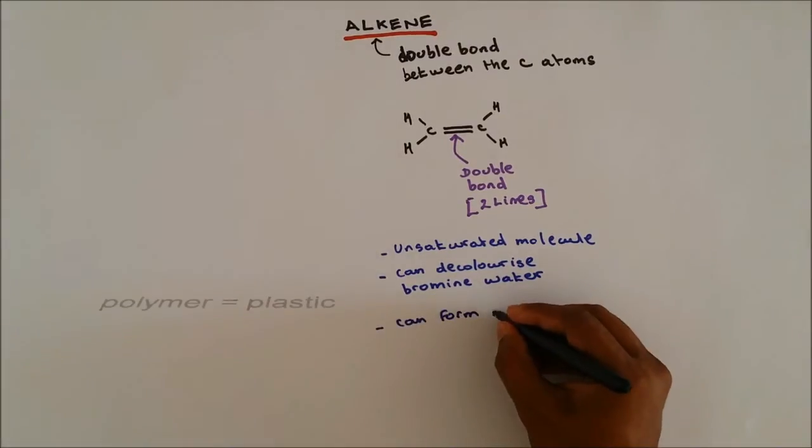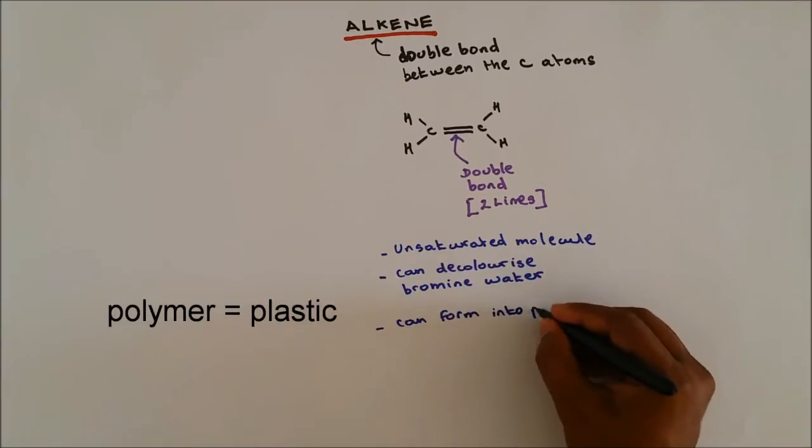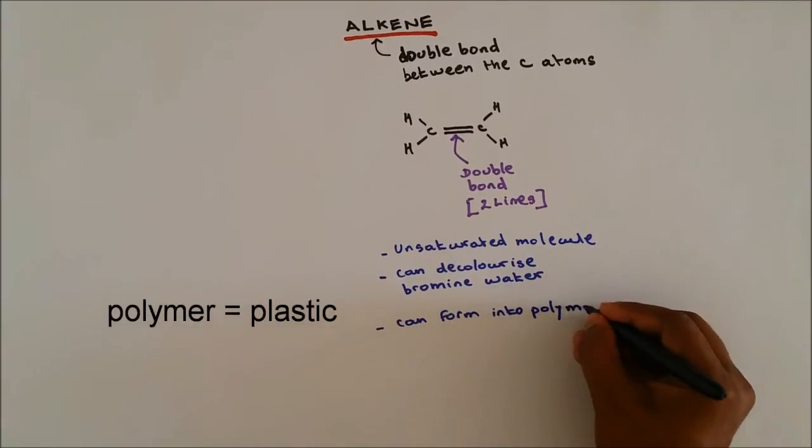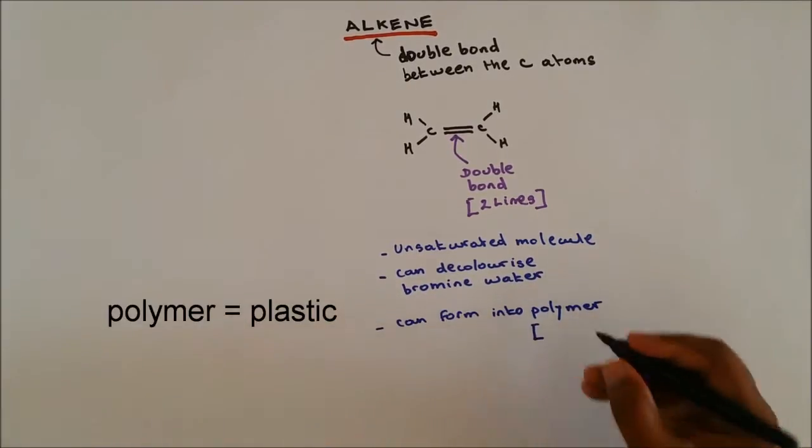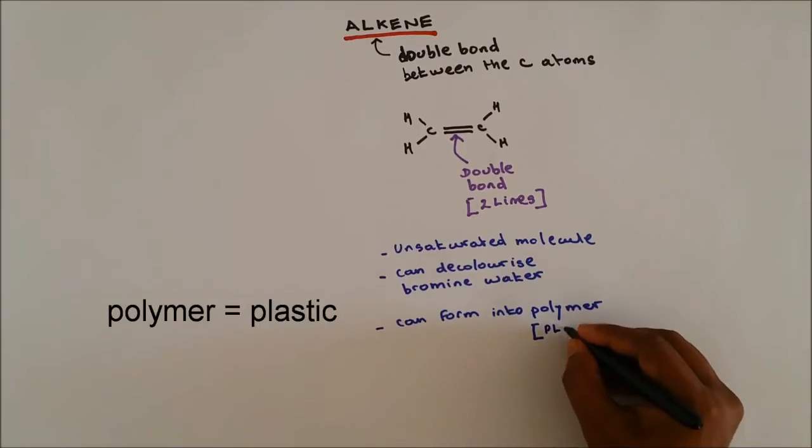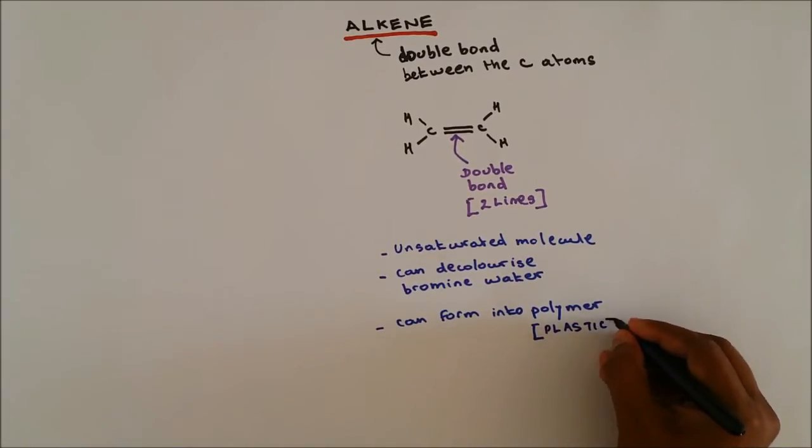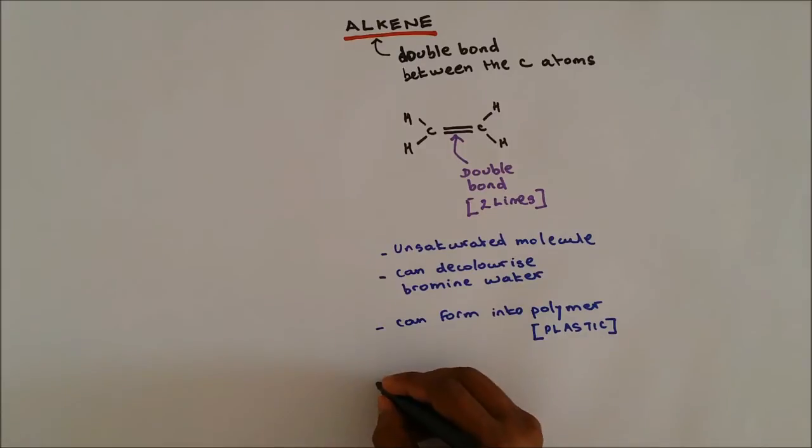It can form into polymer. I mentioned in my previous video that polymer has a different name which is called plastic. And the name of alkene molecules ends with -ene.